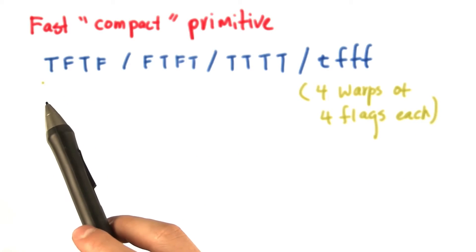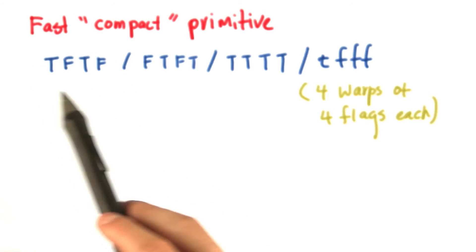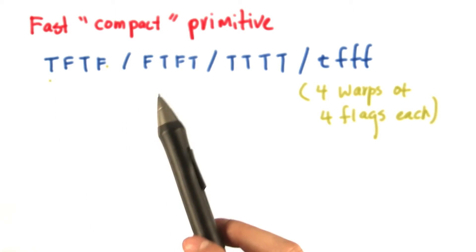As an example, consider the following, where we use a warp of size four to make the example easy to understand.